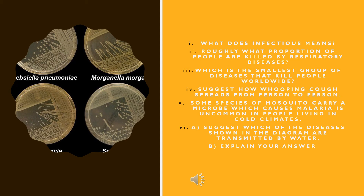The next question is: Roughly what proportion of people are killed by respiratory diseases? You can calculate the proportion from the diagram. The next question is: Which is the smallest group of diseases that kill people worldwide? Look at the diagram carefully and write down your answer.